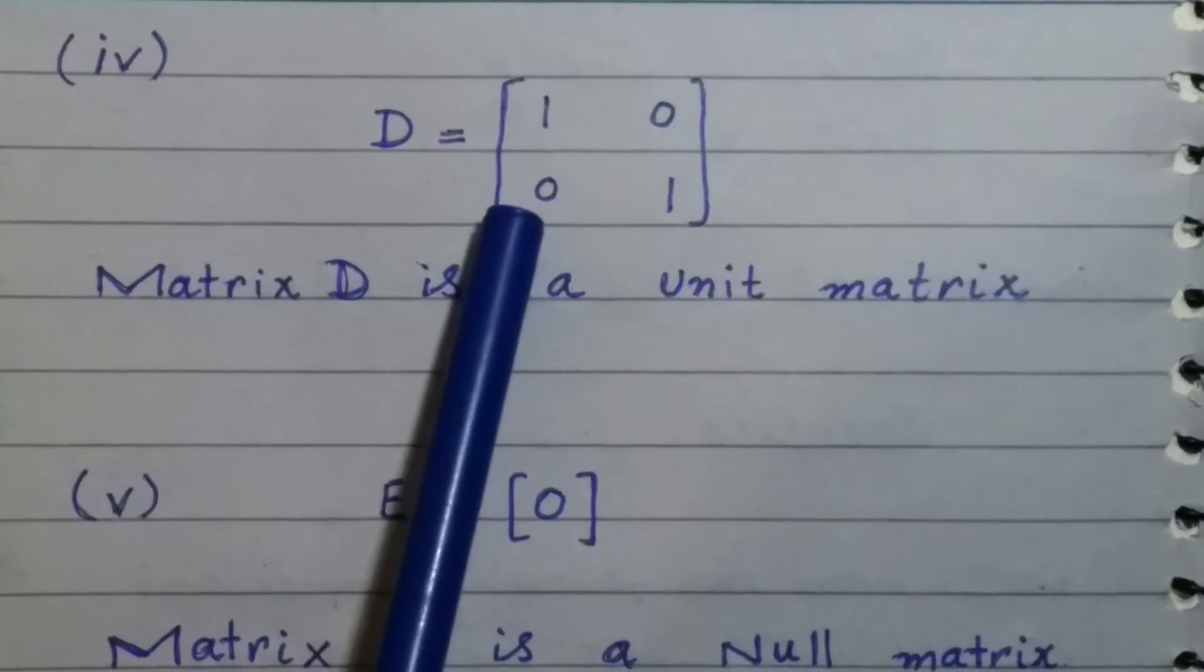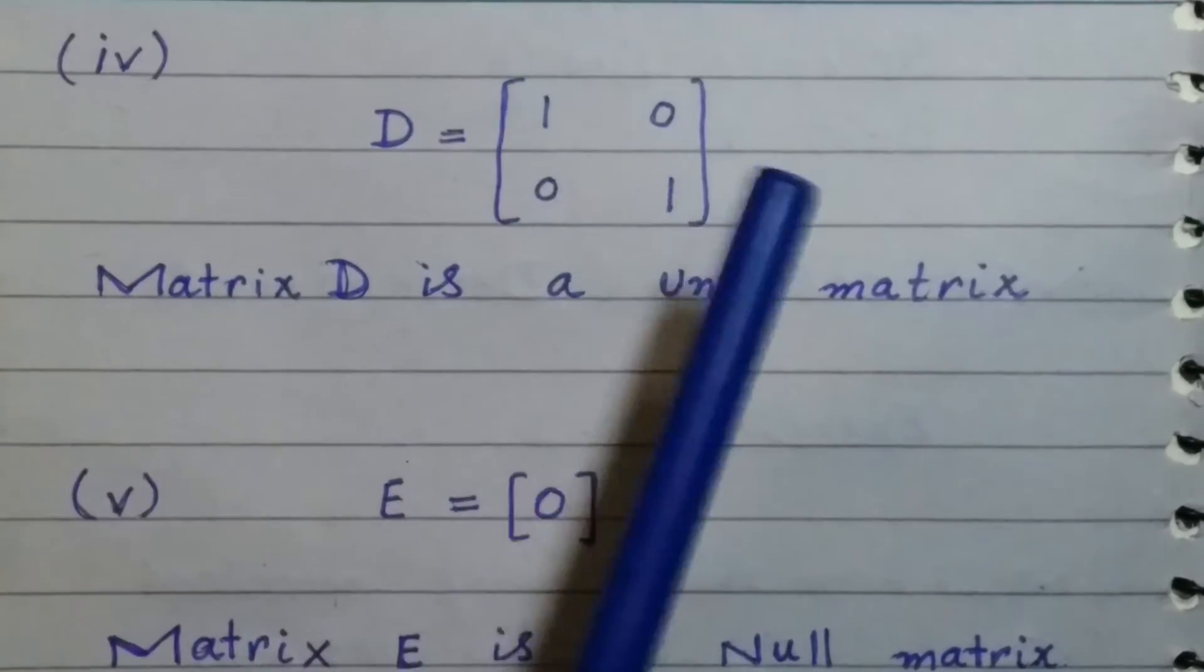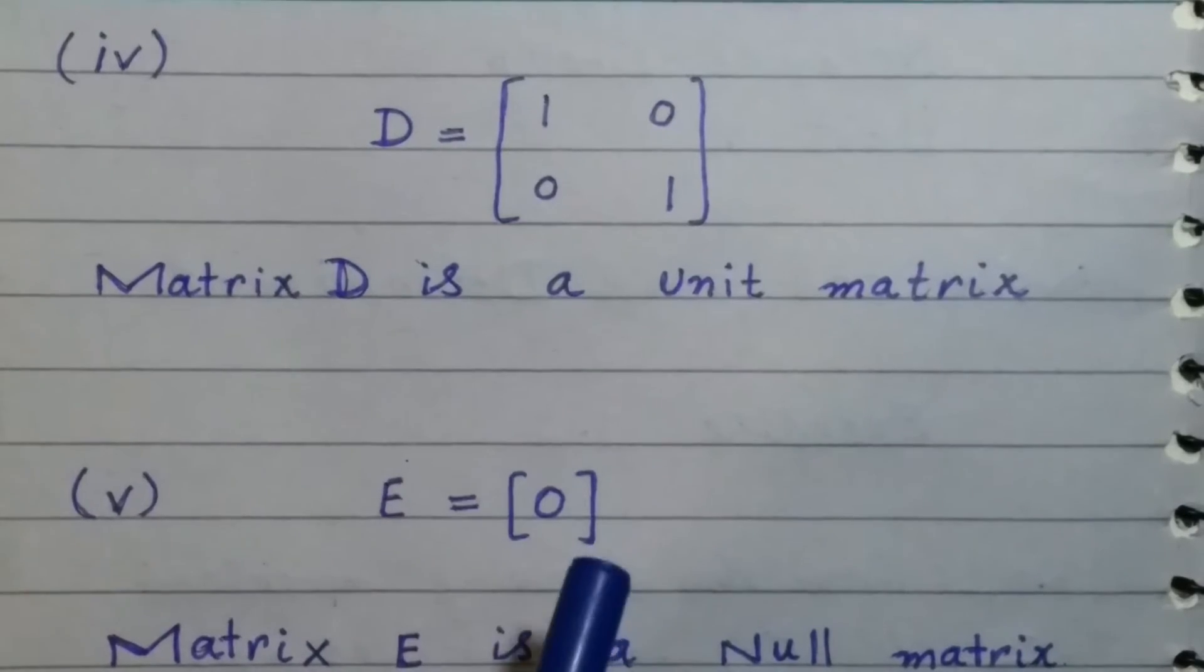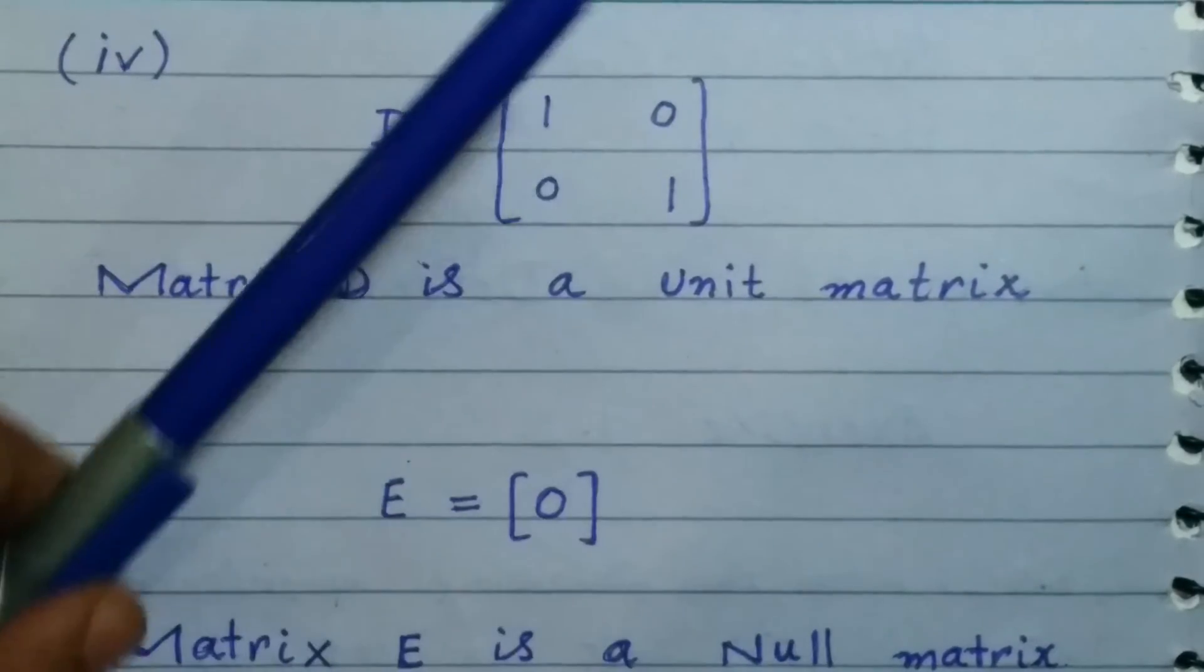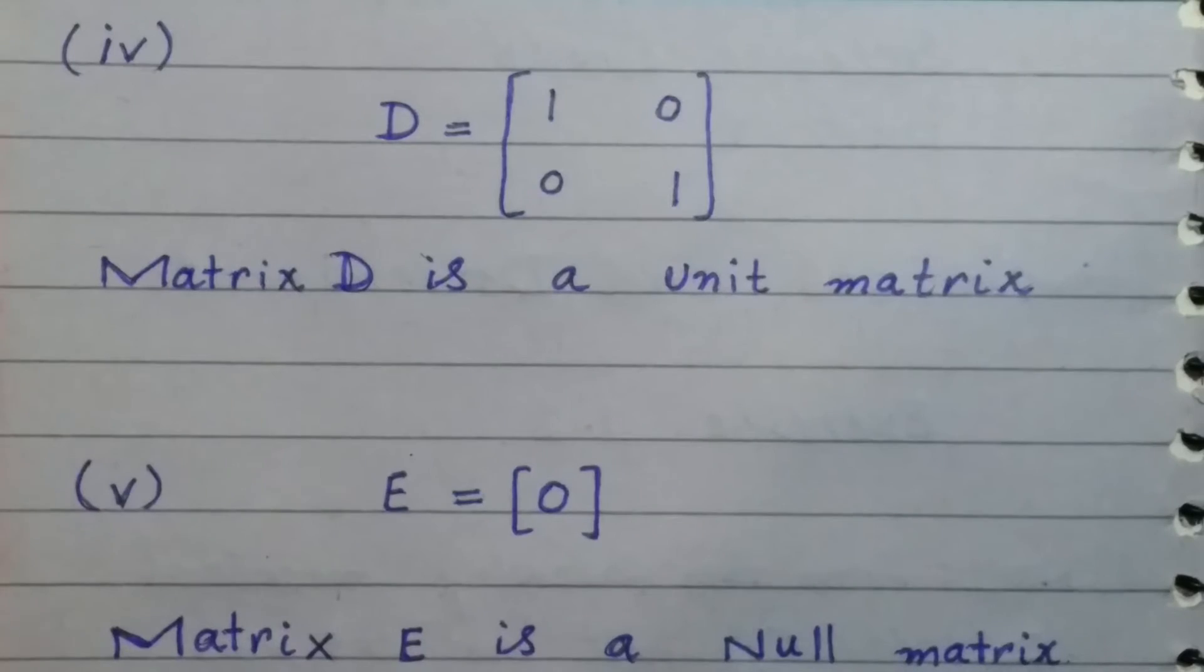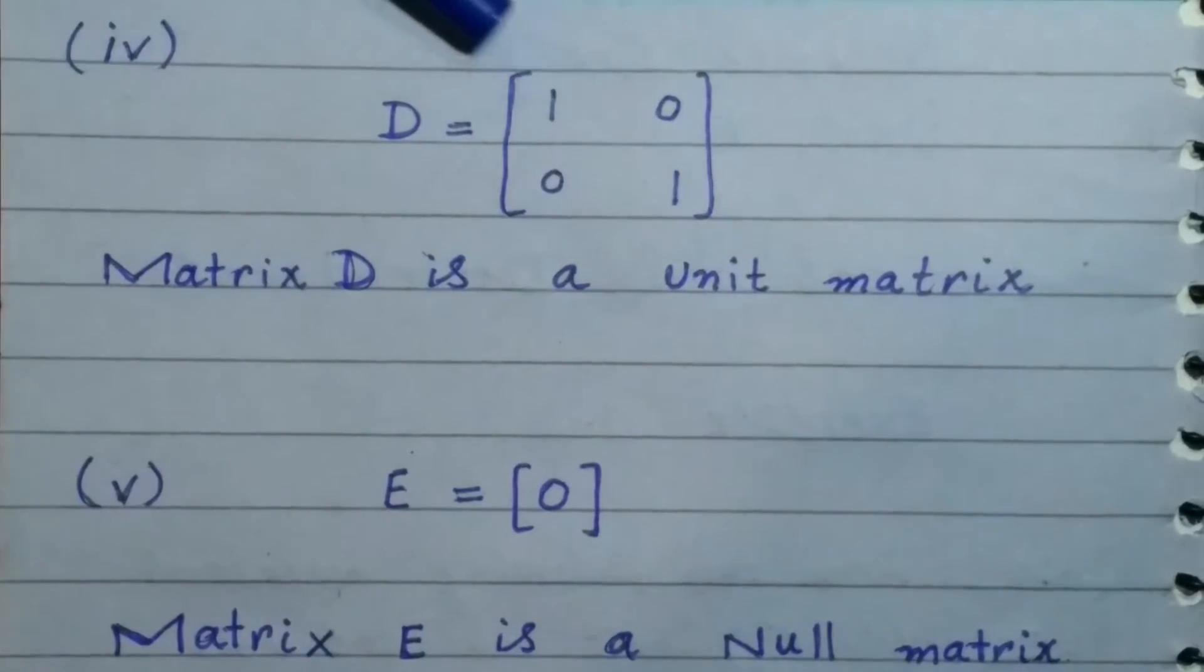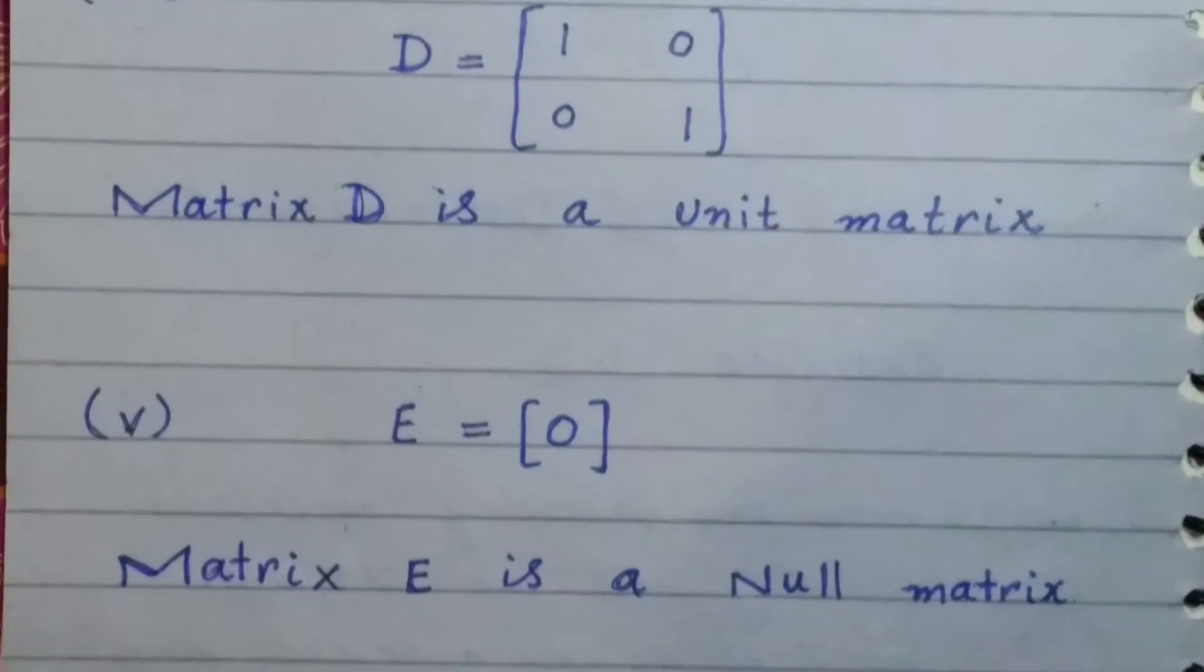Let's discuss matrix D. In this, the diagonal elements are one, while all other elements are zero. A matrix which has ones in the diagonal and all other elements zero is called a unit matrix. So matrix D is a unit matrix because it has ones in the diagonal and all other elements are zero.